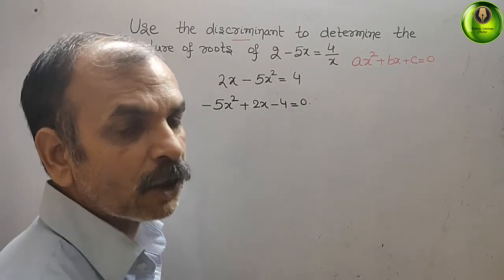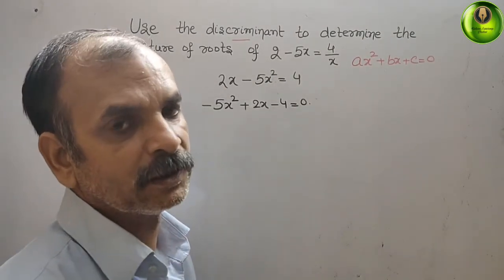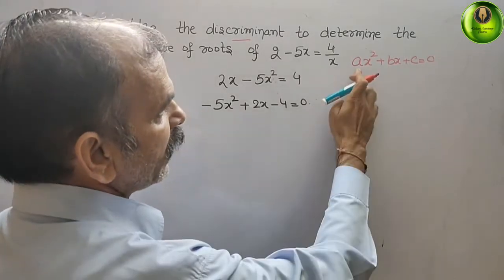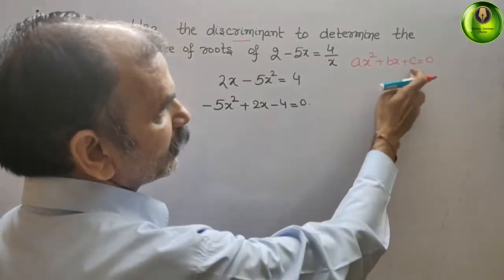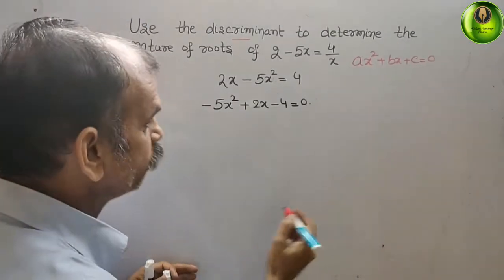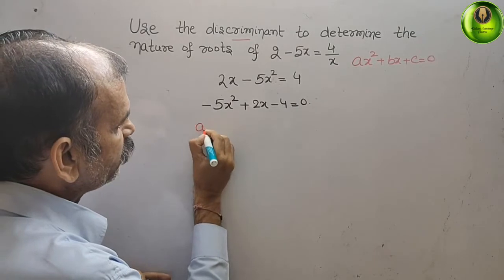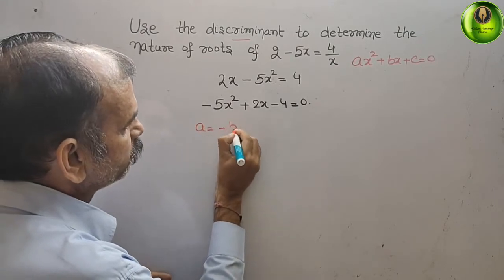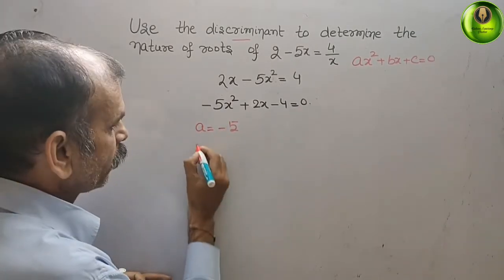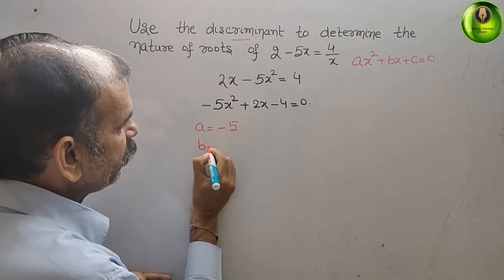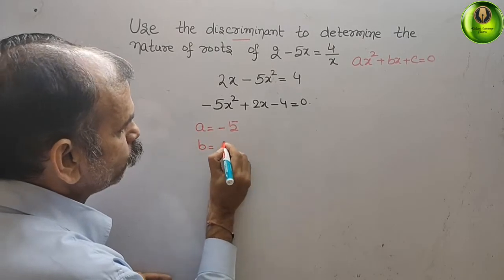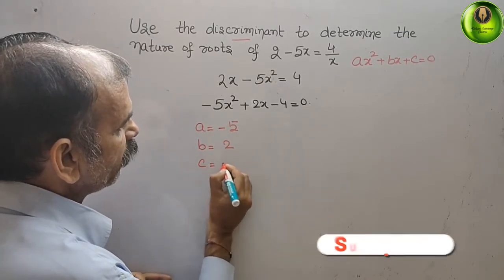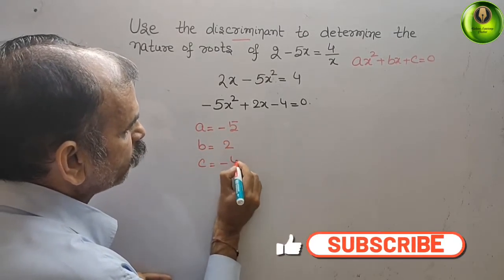Now we find the coefficients a, b, and c. Here, a is equal to minus 5, b is equal to 2, and c is equal to minus 4.